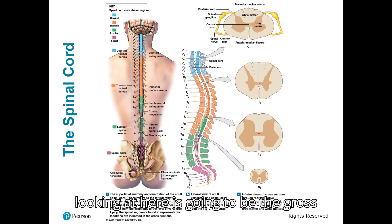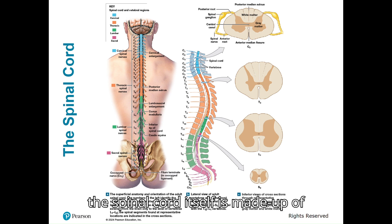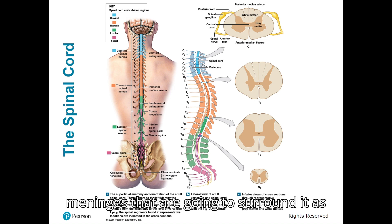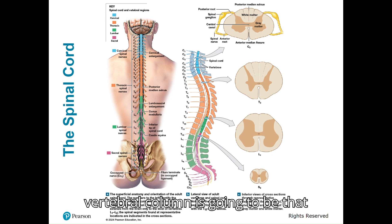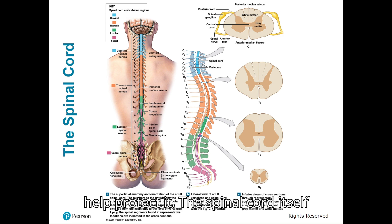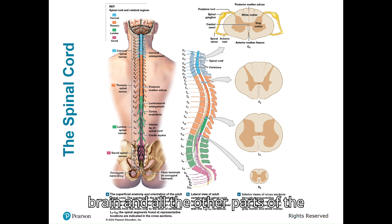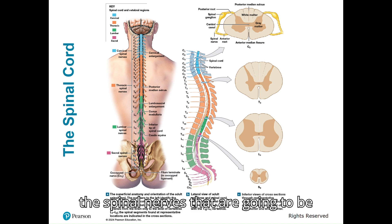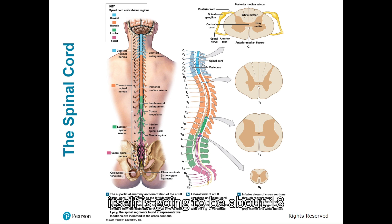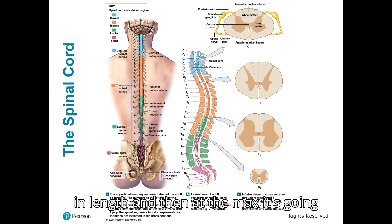What we're looking at here is going to be the gross anatomy of the spinal cord overall. The spinal cord itself is made up of nervous tissue, and it's going to have protective membranes that we refer to as meninges surrounding it, as well as the vertebral column — that strong, bony structure in the front, back, and sides that is going to help protect it. The spinal cord is carrying both motor and sensory information going between the brain and all other parts of the body. It's going to be about 18 inches — 45 centimeters or so — in length, and at its largest portion, about a half an inch at the max.